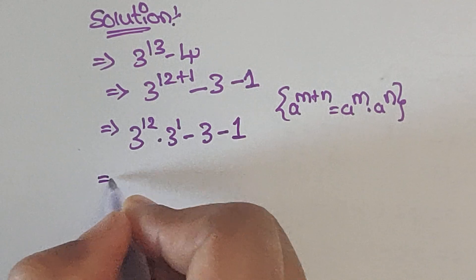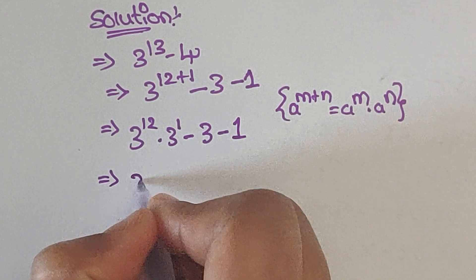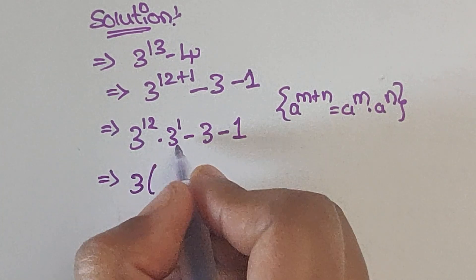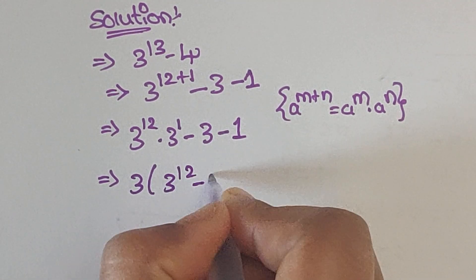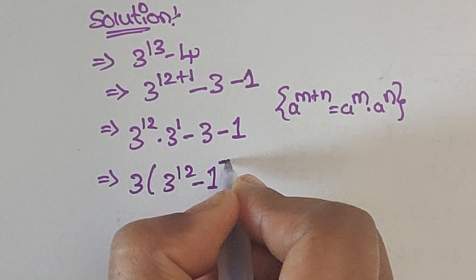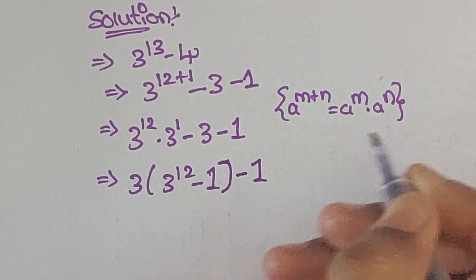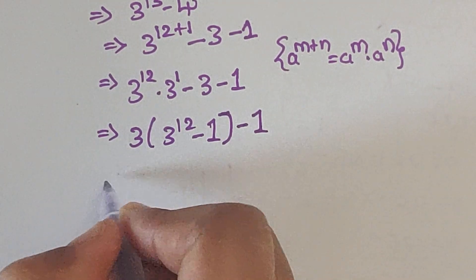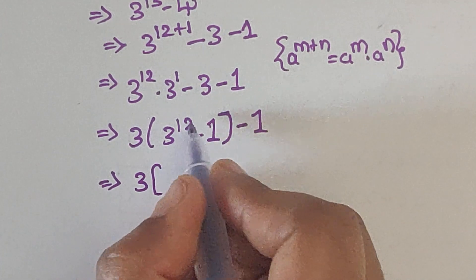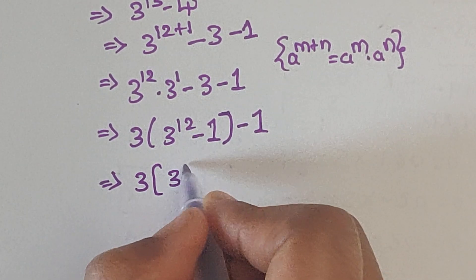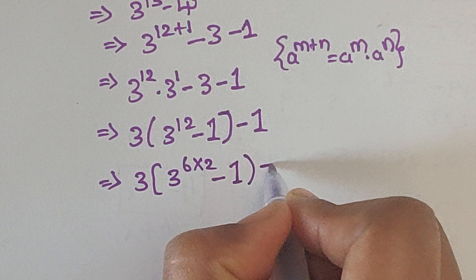In these two terms we have a common factor of 3, so we can take 3 out as common. What remains is 3 to the power of 12 minus 1, and there is one more minus 1. So we have 3 times (3 to the power of 12 minus 1), close the bracket, minus 1.